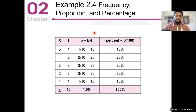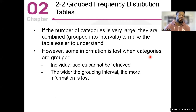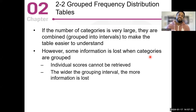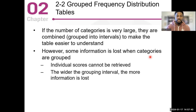Section 2-2: grouped frequency distribution. When you have a very large number of categories and a large number of scores, sometimes it's easier to combine them into what we call group intervals. Once you see it, you'll understand what we're talking about. It makes the table a lot easier to understand, but when you group frequencies you lose information.